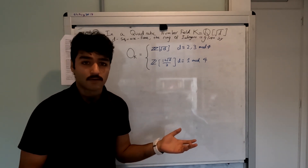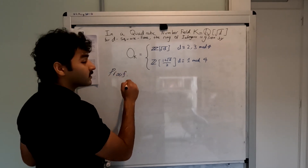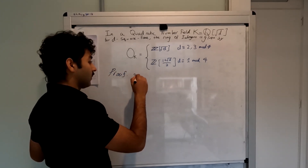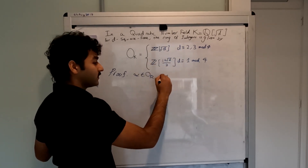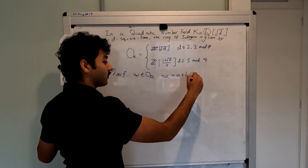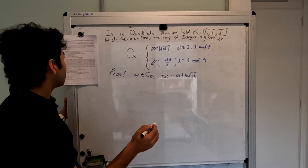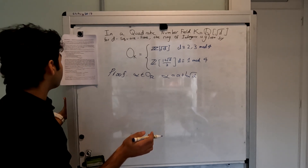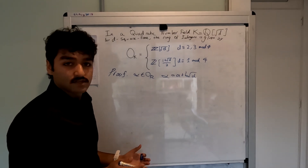Now we'll begin on the proof of this theorem. Suppose alpha is an algebraic integer. Then since alpha is in Q(√d), alpha is of the form a plus b√d. And since alpha is an algebraic integer, its minimal polynomial must have integer coefficients.